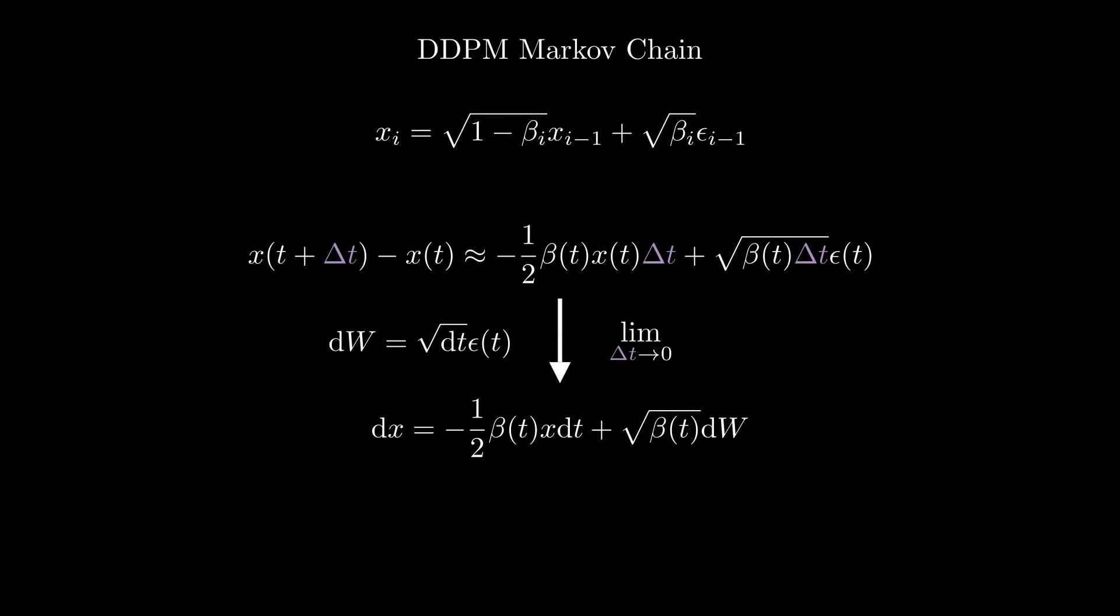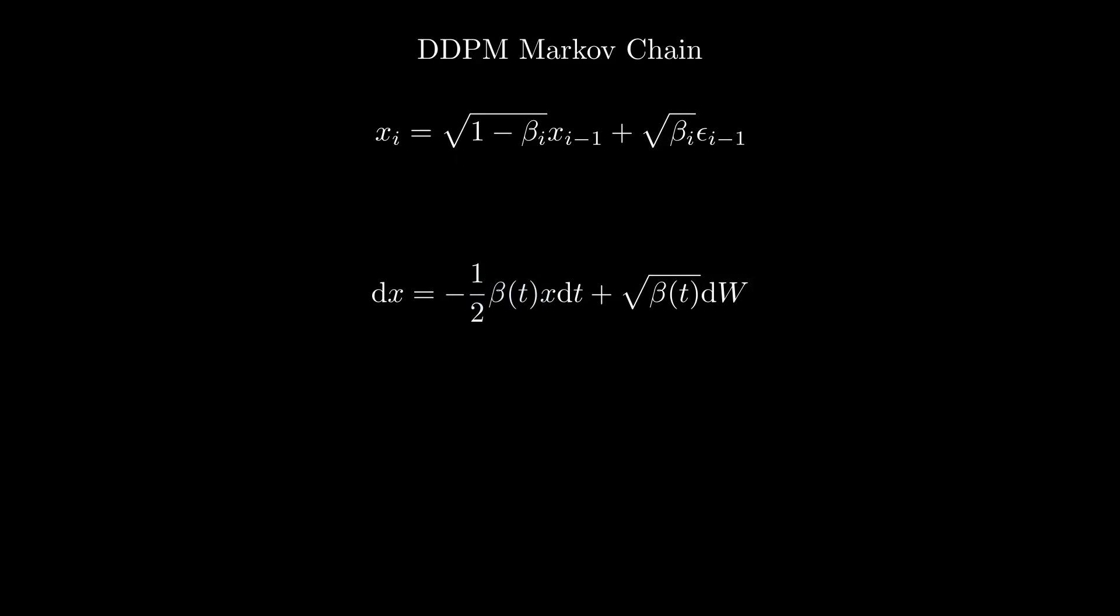And we're back to our Ito equation. The drift term on the left is minus one-half times beta of t, our variance schedule, times x, our image or particle. And the diffusion coefficient is the square root of beta of t, which makes sense because it's just the standard deviation of the noise we chose to add at each step in DDPM.